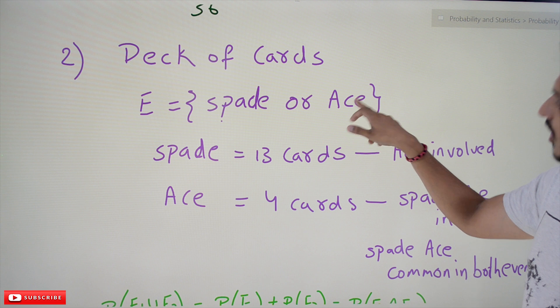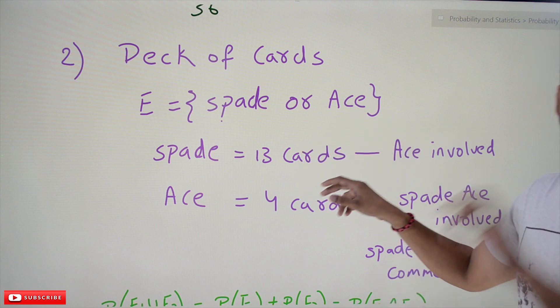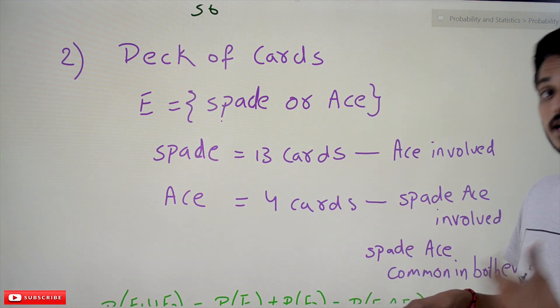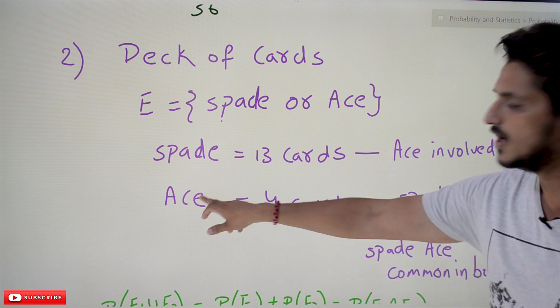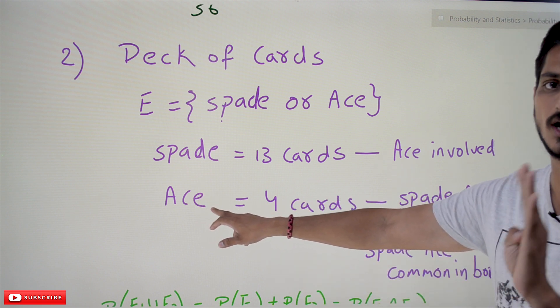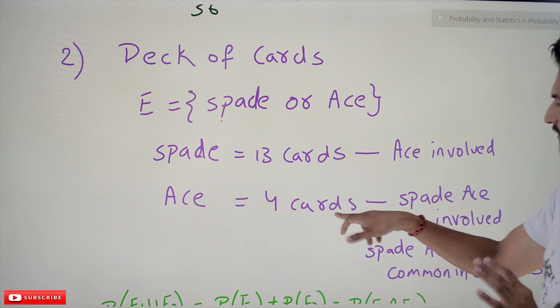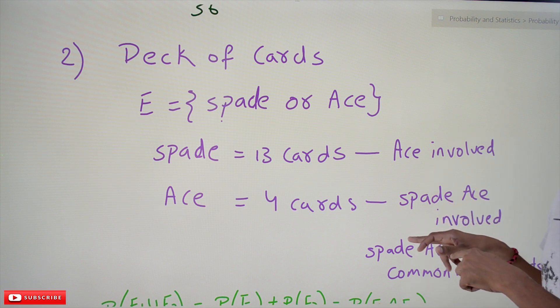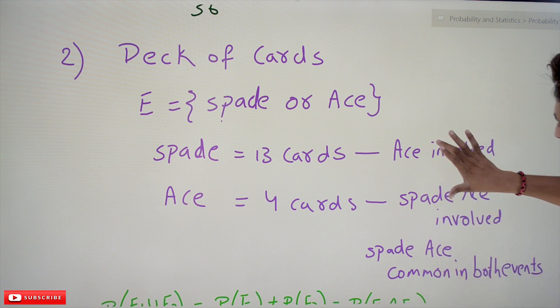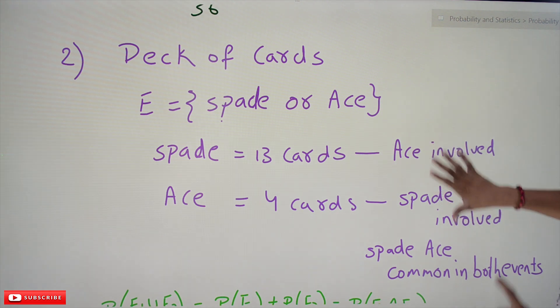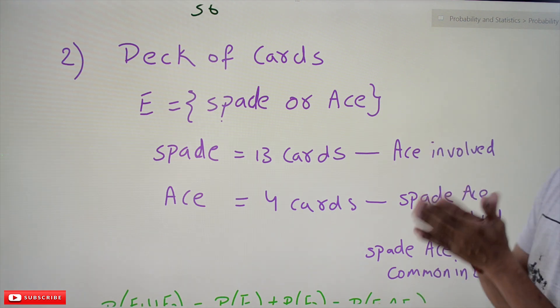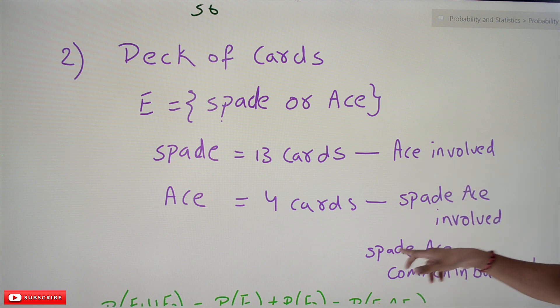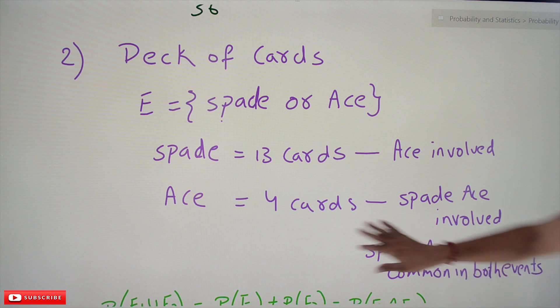The second option is you can pick an ace from the deck of cards. In the deck of cards we have 52 cards total. Four ace cards are there. In those four cards, spade ace is involved, meaning the ace of spade is a common element. These two sets have a common element which is the spade ace, common to both elements.